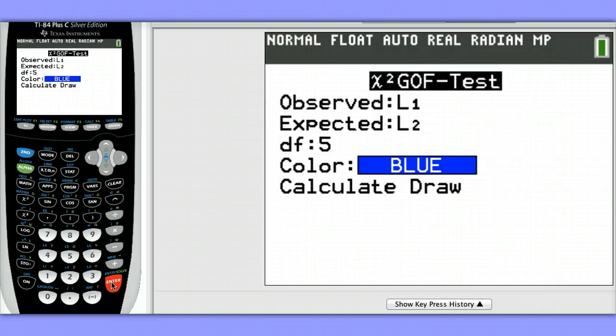Our observed counts are on List 1, our expected counts are on List 2. We'd have to actually change these if they were stored in different lists. Don't forget to change our degrees of freedom. Our degrees of freedom is one less than the number of categories, so that would be 3. Come down here to Calculate.